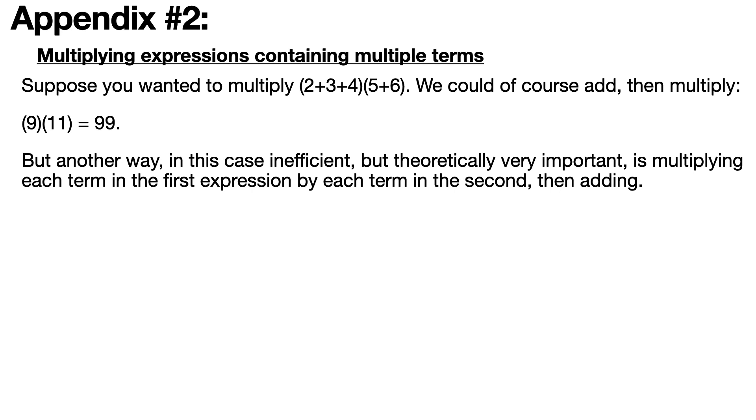Appendix number two: multiplying expressions containing multiple terms. This is about expanding algebraic expressions. First we're going to do a concrete example that might be kind of insultingly easy, but it's good to do things concretely first and then algebraically. Suppose you want to multiply two plus three plus four, that whole thing times five plus six. Most people would add first to get 99.